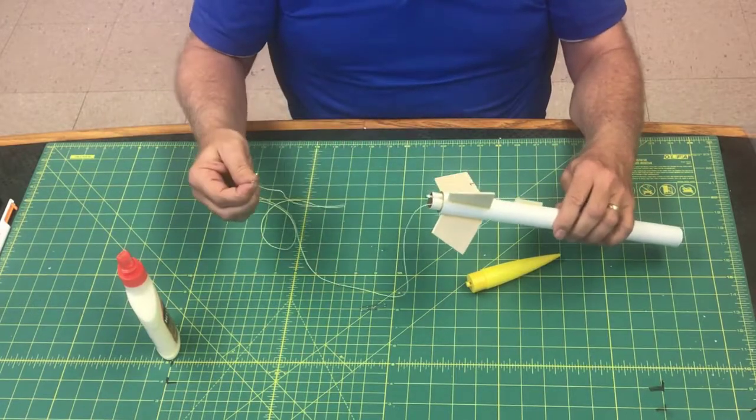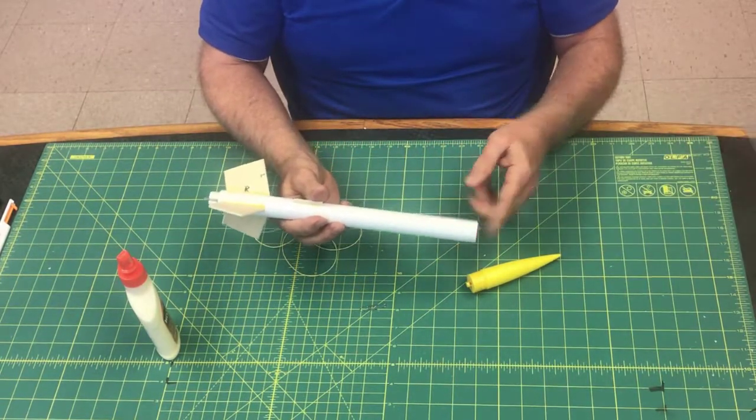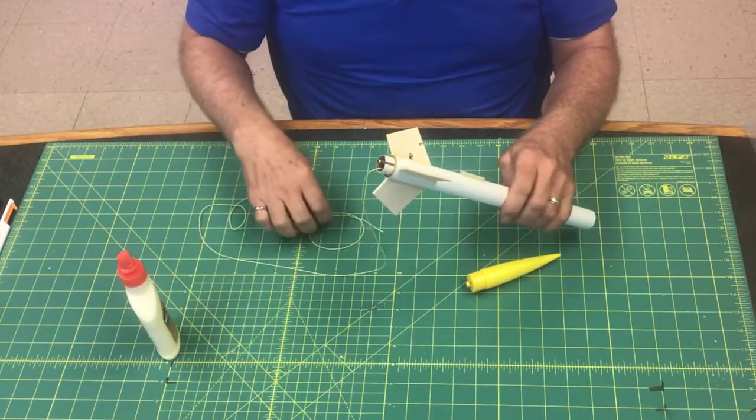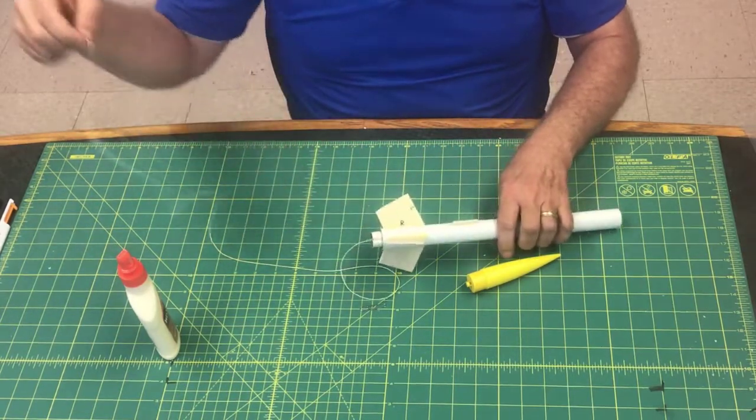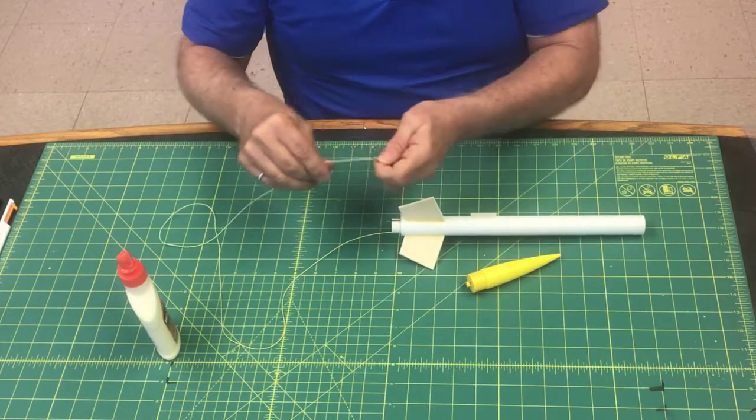So the first thing we're going to have to do is get this shock cord back through, coming out the top of the rocket, because we pulled it out the bottom because it was easier to assemble it. Now it's kind of tough to push this thread through there, this shock cord through there. So I've discovered an easier way to put the shock cord through there.